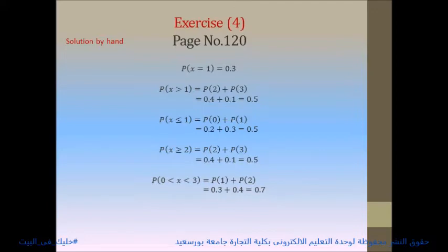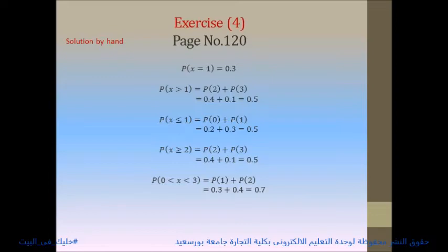For part A: P(X = 1) is taken directly from the table and equals 0.3. For part B: P(X > 1) includes x = 2 and x = 3, so P(2) + P(3) = 0.4 + 0.1 = 0.5.